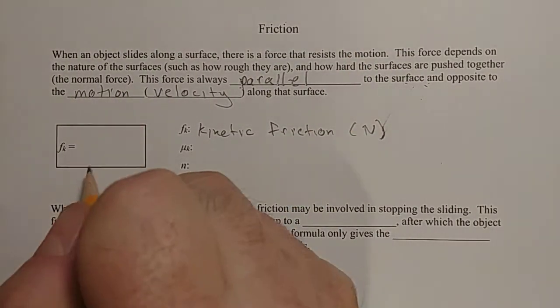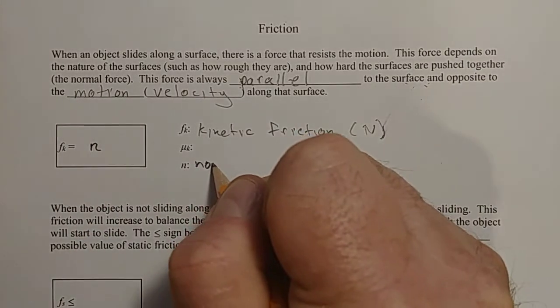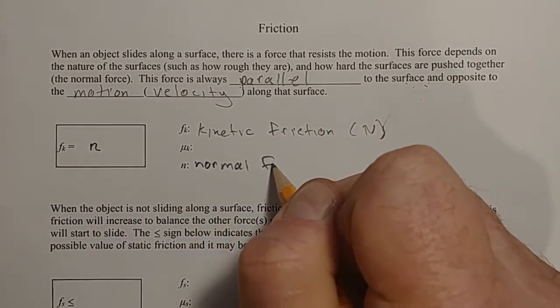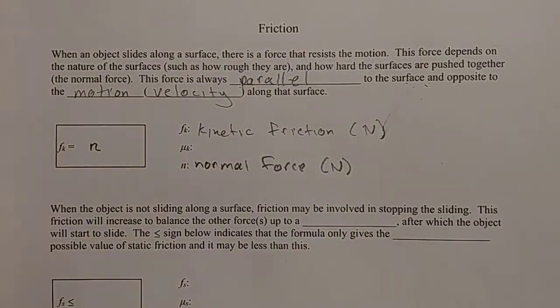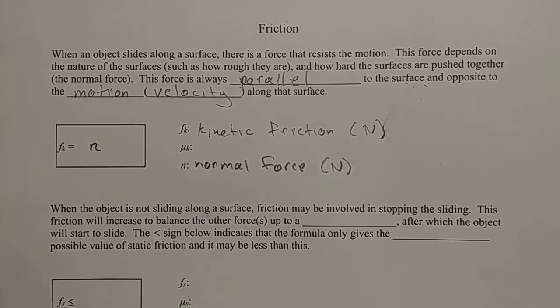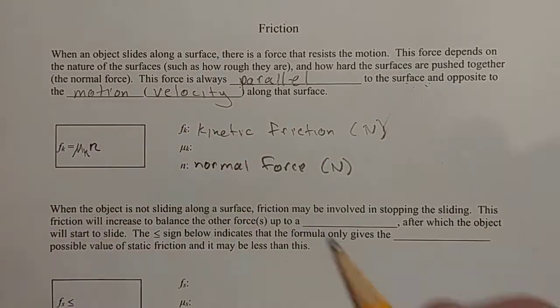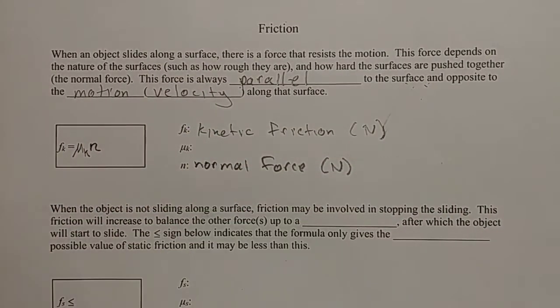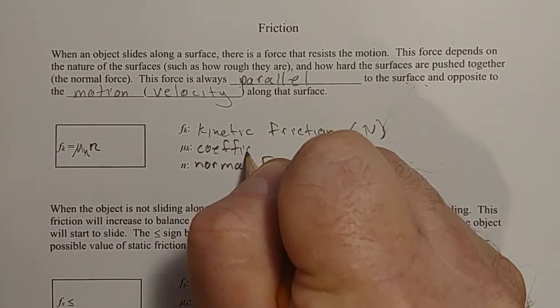So what does this force depend on? It depends on the normal force, which is also in Newtons. And that normal force is multiplied by this number, which depends on the nature of the surfaces. And that number is represented with the Greek letter mu, italicized, mu K we call it, which is known as the coefficient of kinetic friction.